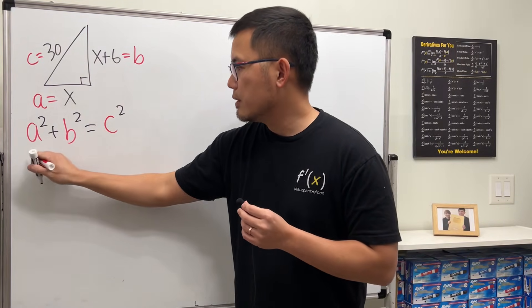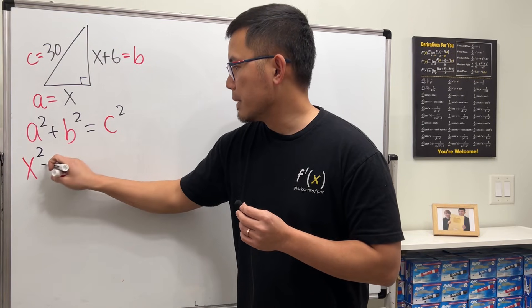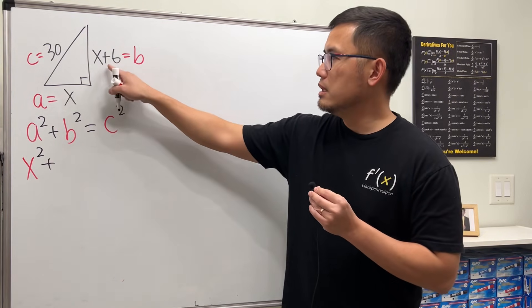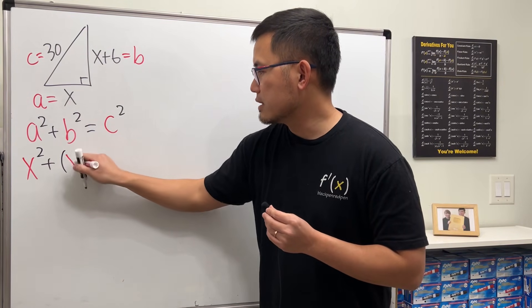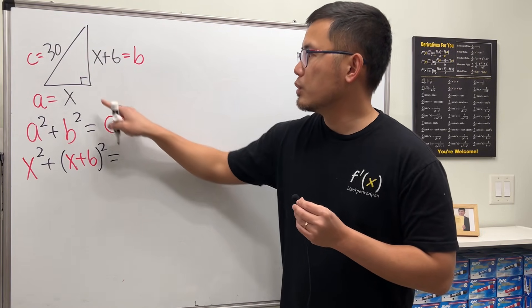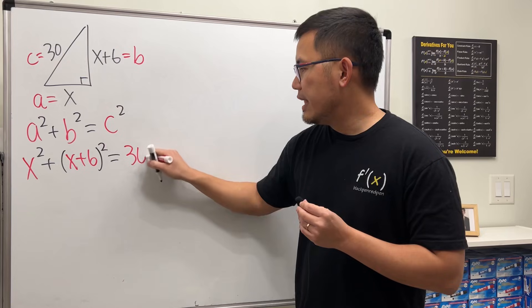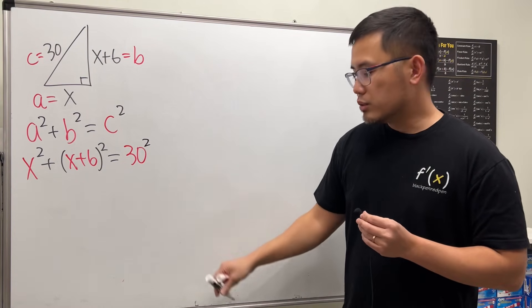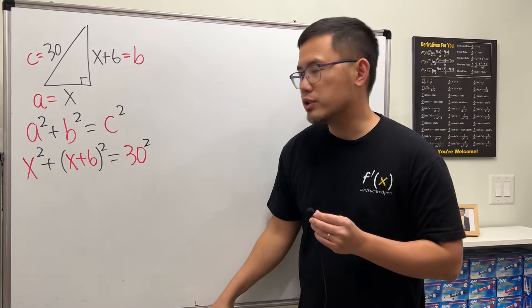x goes here, so we have x² plus b is x + 6. So we have (x + 6), square that, and that's equal to c, which is 30, and then square that. And now we can just work on this quadratic equation.